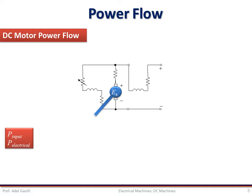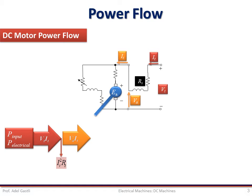In the case of a motor, the input power is electrical and the output power is mechanical. So the input power is defined by the product of the terminal voltage VT and the terminal current IT. Following this terminal current, we can see that it goes through the series resistance RS, leading to copper losses defined by IT² × RS. These losses are subtracted from the input power, and the remaining power VA×IT will reach the shunt field and armature windings.